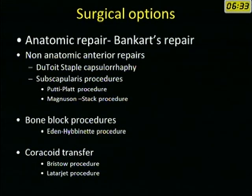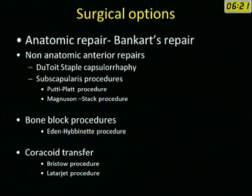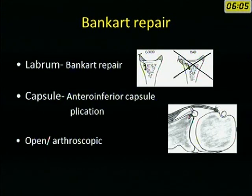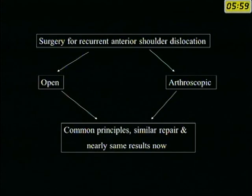This condition cannot be treated non-operatively and surgery is required. There are more than 50 operations described in literature. Broadly speaking, the anatomic repair is the Bankart repair and the rest are all non-anatomic repairs. Today the Bankart repair is preferred, where you replace the avulsed labrum from the antero-inferior glenoid to the face of the glenoid — not to the neck — and perform shrinkage of the capsule by antero-inferior plication. Surgery can be done open or arthroscopically, and both approaches share common principles with nearly the same results.